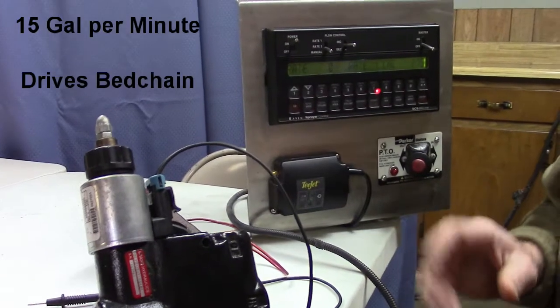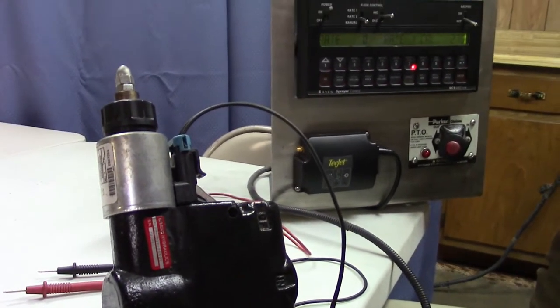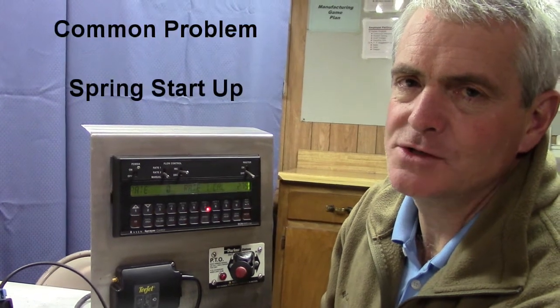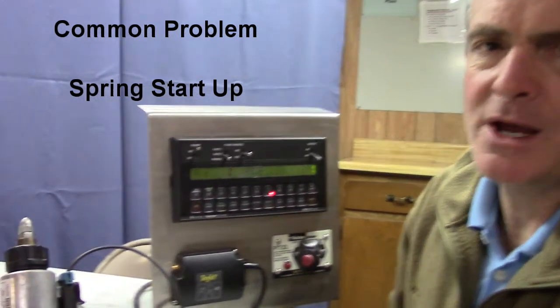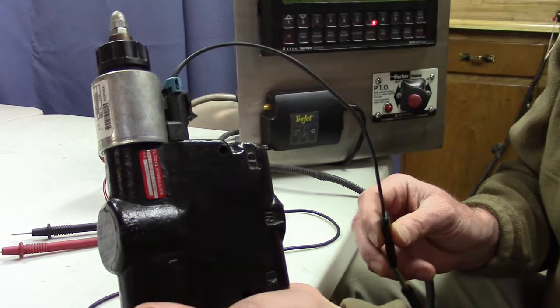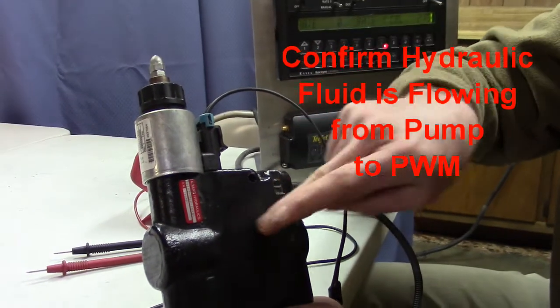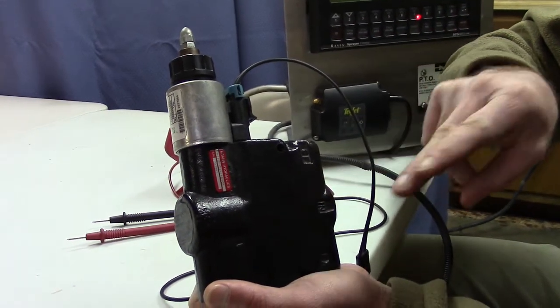So this is our Raven 15 gallon per minute PWM valve and we have customers from time to time call and say, I think I have everything set up correctly but my bed chain is not moving. This happens a lot of times at the first of the season when they first get their truck out and start using it. If we know we got everything set up right and the bed chain is not moving, we make sure that we have hydraulic fluid coming from the pump. When hydraulic fluid comes to the pump, it comes to this PWM valve, this pulse width modulating valve.